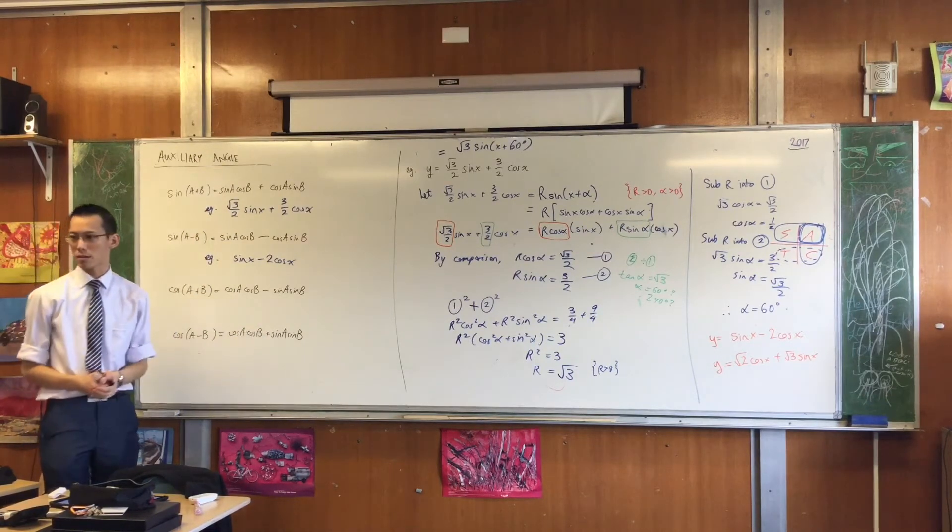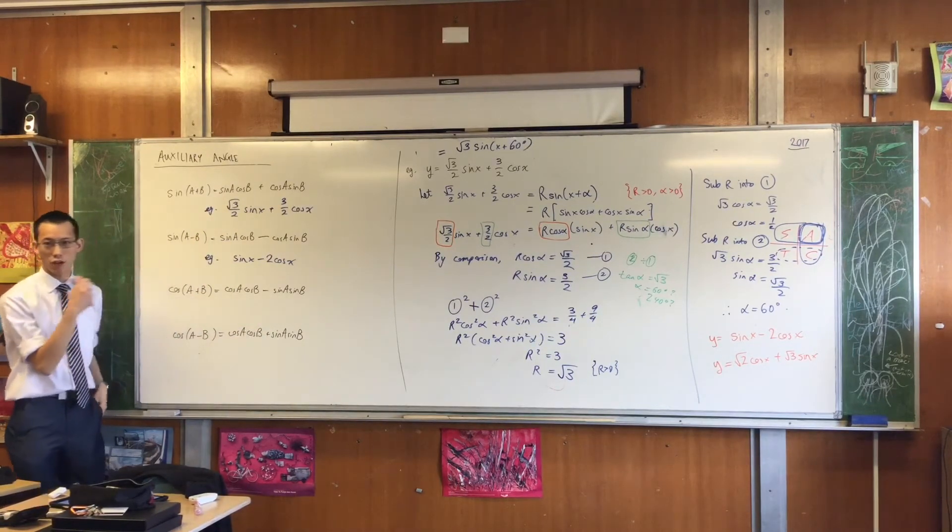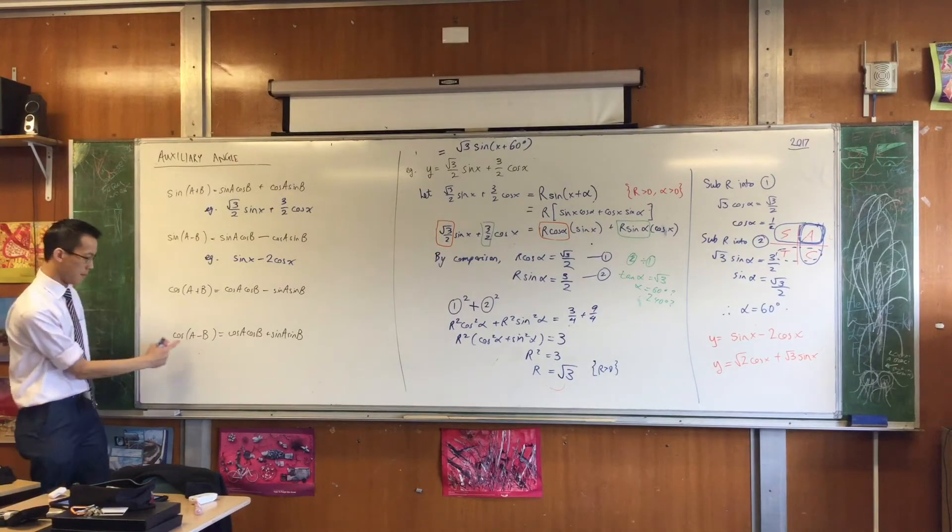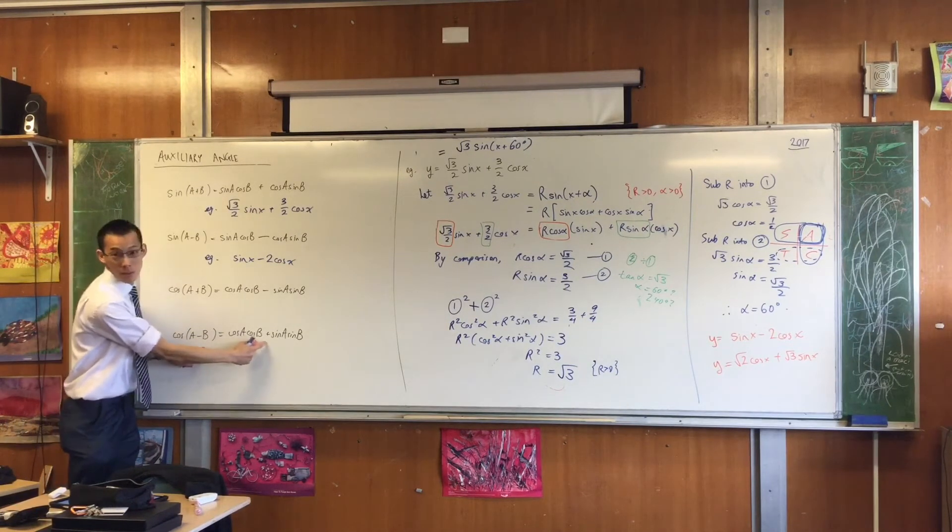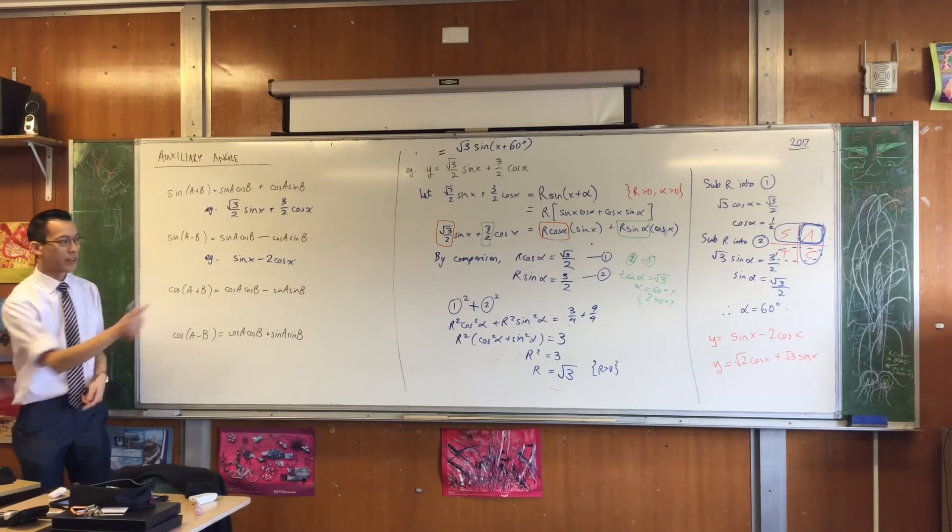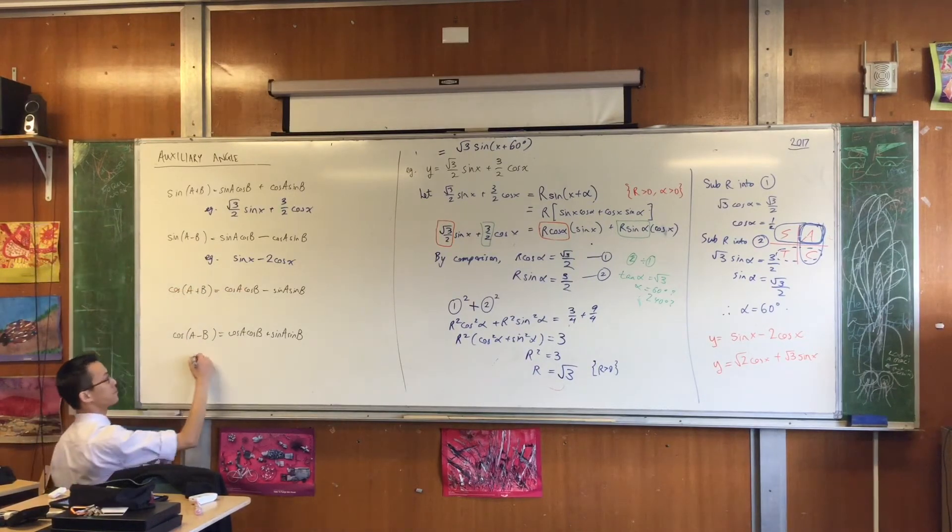The sign in the middle is a plus, so which of these looks like it'll be more useful? This one here, minus, gives me a plus in the middle, because cosine does that mean swapping thing. So if I saw that question,